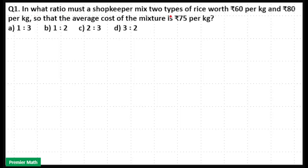In what ratio must a shopkeeper mix two types of rice worth ₹60 per kilogram and ₹80 per kilogram so that the average cost of the mixture is ₹75 per kilogram?